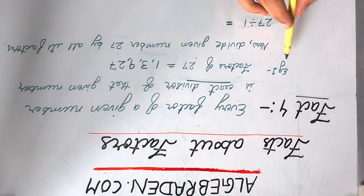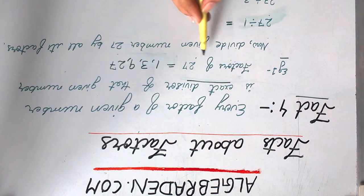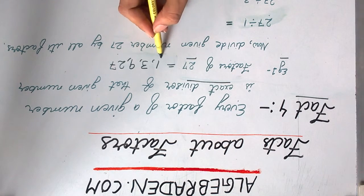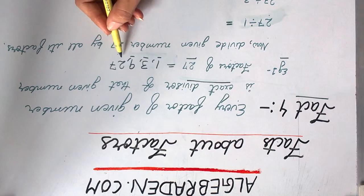To understand this, let's have an example. Factors of 27 are 1, 3, 9 and 27.